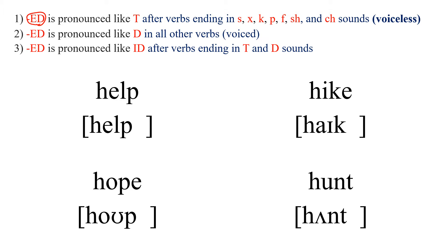First of all, ED is pronounced like T after verbs ending in S, X, K, P, F, SH, and CH sounds and they are called voiceless.